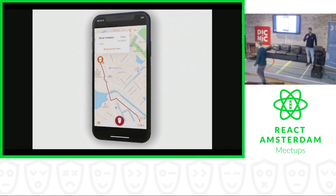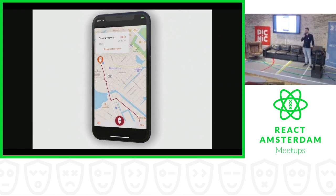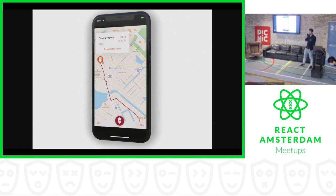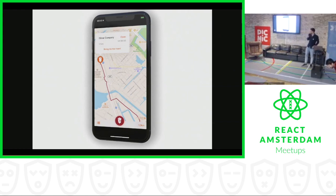It's an app called New Dooner and it helps you to find the nearest kebab shop no matter where you are. I came up with this idea after I went out several times in Amsterdam and I couldn't find a place to eat.